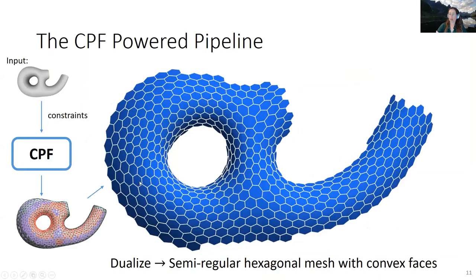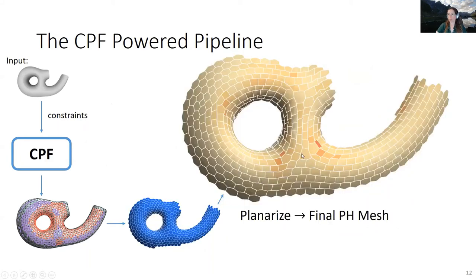We then use this mesh, dualize it to get a semi-regular hexagonal mesh which has convex faces, but then we planalize it to get the output—the final planar hexagonal mesh.